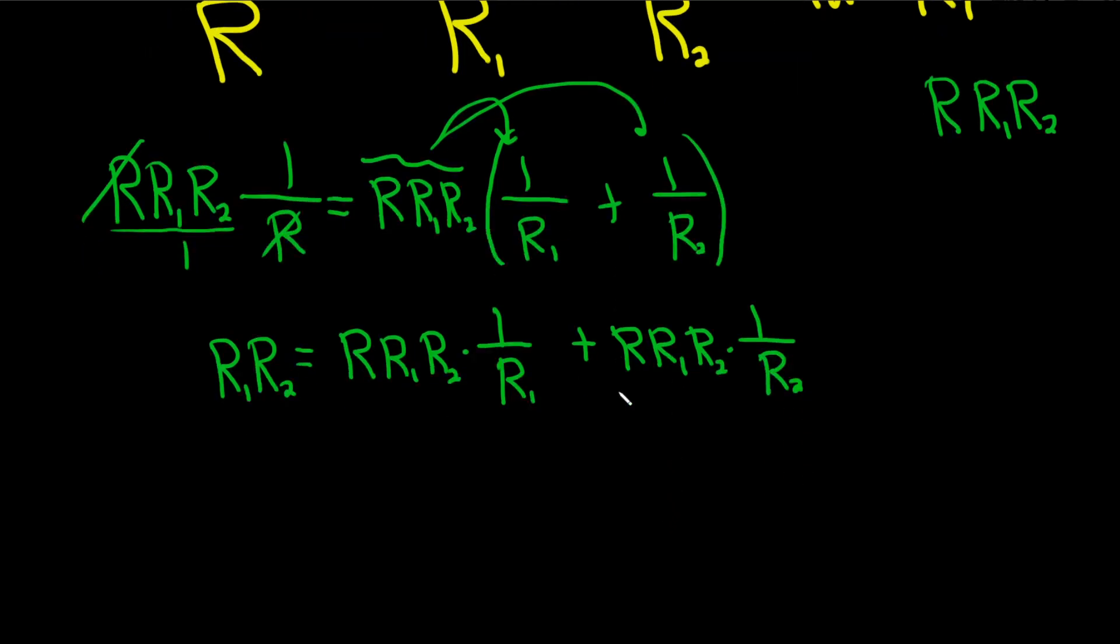Let's keep going. So we have R sub 1, R sub 2 equals, so here it looks like we lose an R1. So we get R, R2 plus, and then here we lose an R2, so we get R, R1.